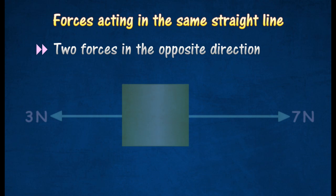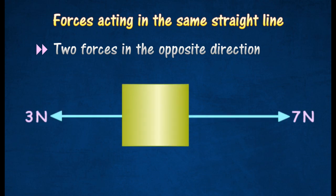If two forces of 3 N and 7 N act in opposite direction, its resultant force is 4 N.